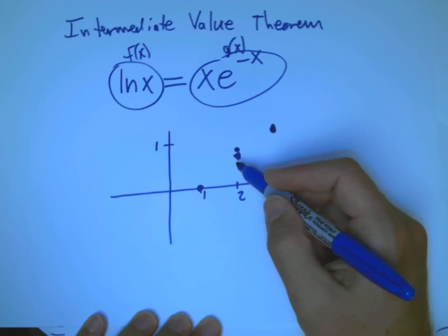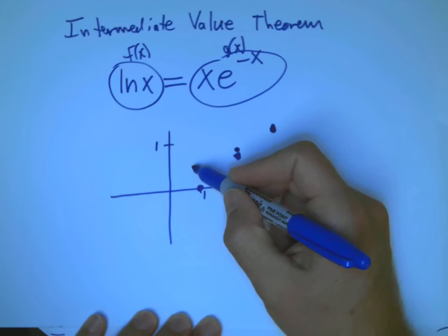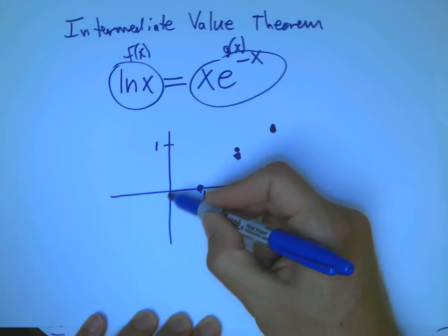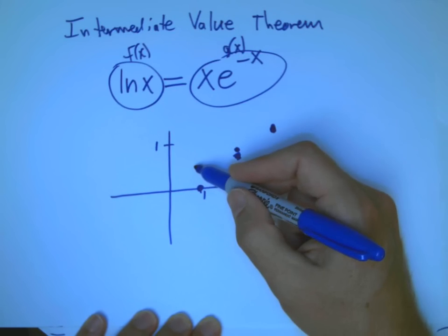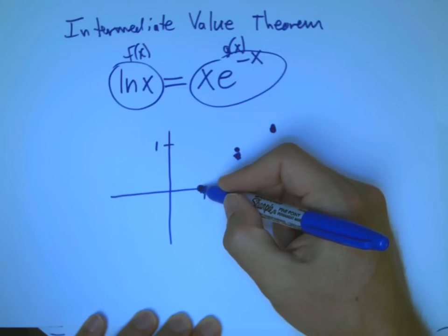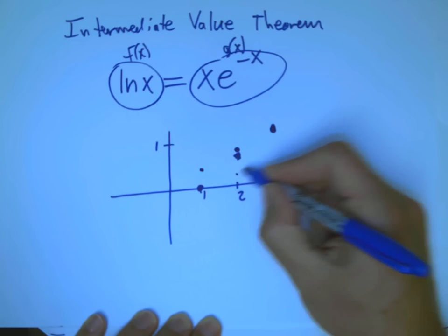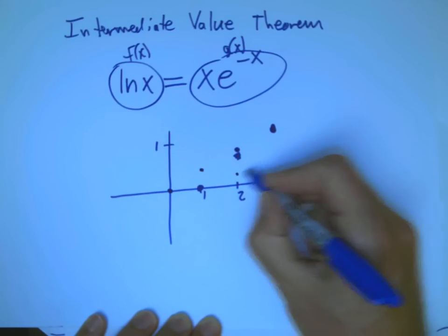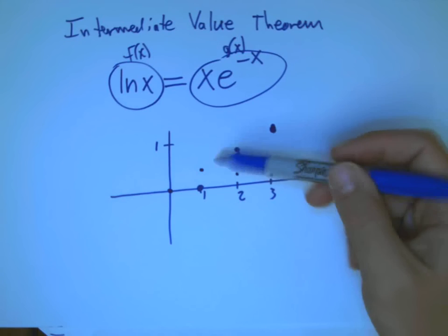Xe to the minus x is another kind of interesting looking curve. It goes roughly like this. It starts out negative because the x is negative. It goes up and then it comes down. It's the kind of thing you can check on your calculator if you want. And when x is at 1, it's 1 over e. It's something like in here. And then it's 2 over e squared, something like this.